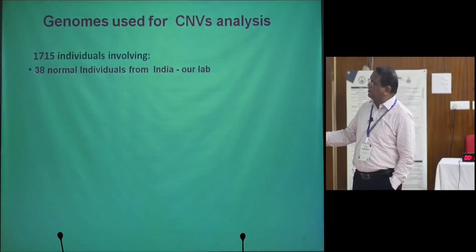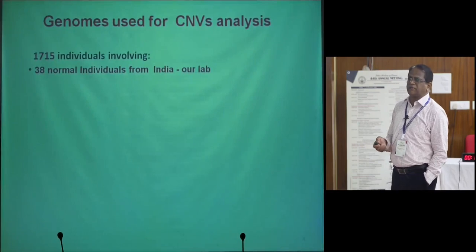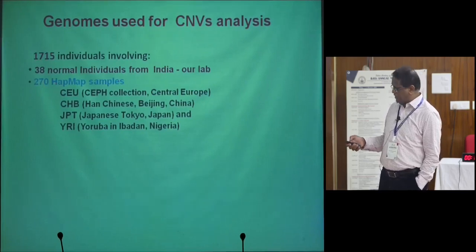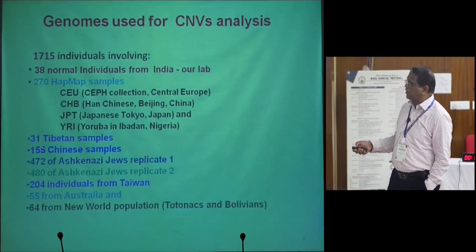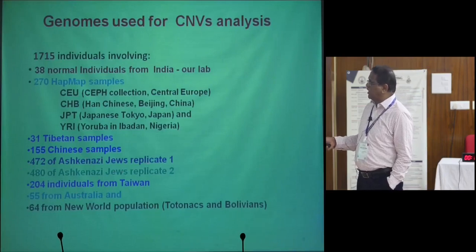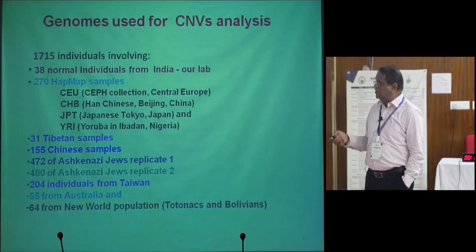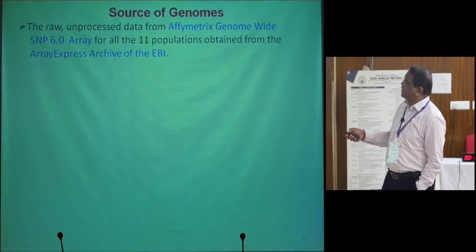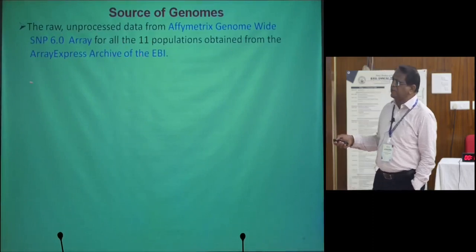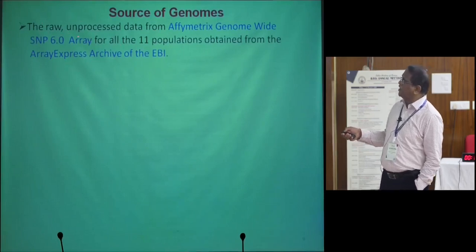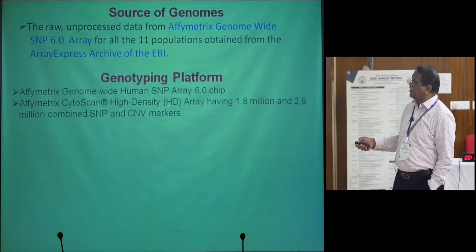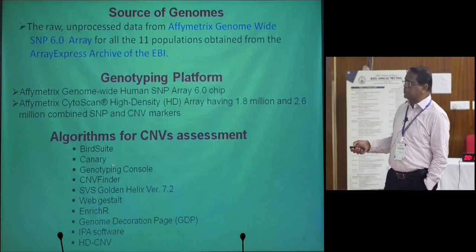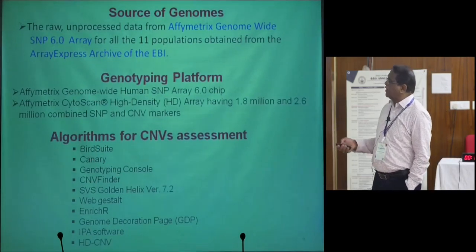In our lab, 38 individuals were analyzed using the Affymetrix 6.0 array. Along with that, from genome databases, 270 HapMap samples are available, 31 Tibetan population samples, 152 Chinese population samples, Ashkenazi Jewish replicates 1 and 2, Taiwan, Australia, and other new populations — totaling 1,715 individuals. This raw unprocessed data was obtained from the EBI with consent, from 7 to 11 populations. The data was processed using genomic platforms and various tools with high statistical stringency.